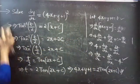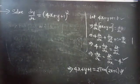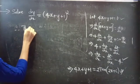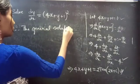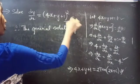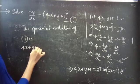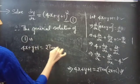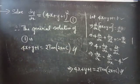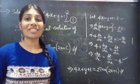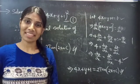So, this is the general solution of the given differential equation. Therefore, the general solution is 4x plus y plus 1 equals 2 into tan of 2x plus c. So, this completes the problem. We have seen a problem from differential equations using the variable separable method. Hope you will understand. We will see you in the next video.